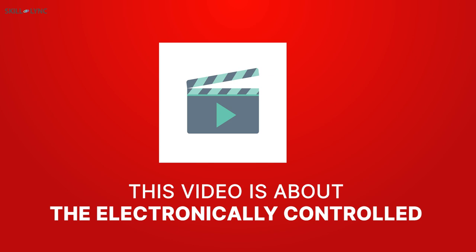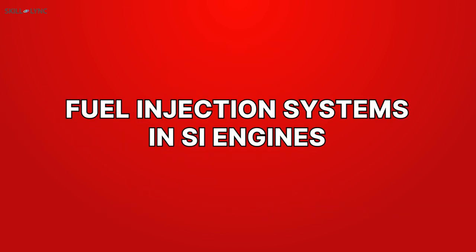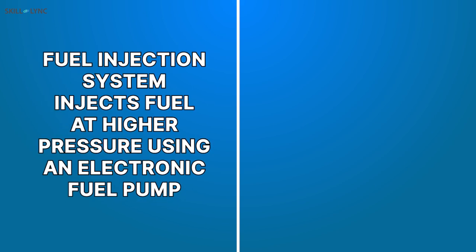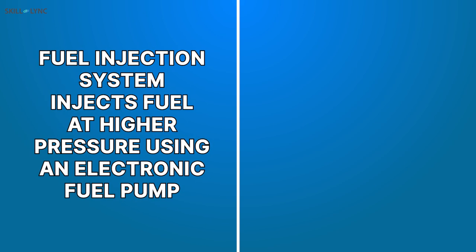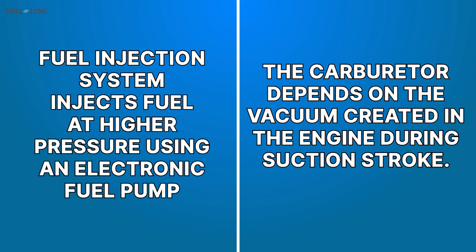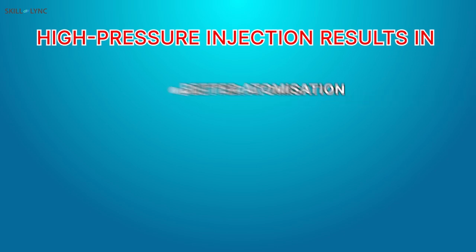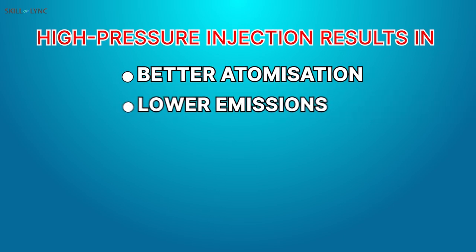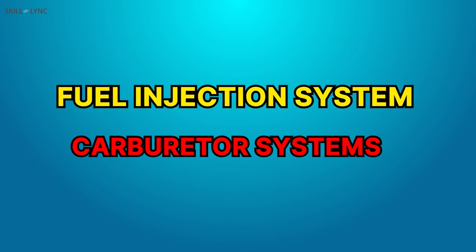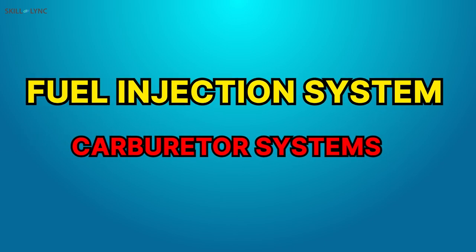This video is about the electronically controlled fuel injection system in SI engines. Fuel injection system injects fuel at higher pressure using an electronic fuel pump, whereas the carburetor depends on the vacuum created in the engine during suction stroke. High pressure injection results in better atomization of the fuel, lower emissions and increased power. This makes the fuel injection system a better option when compared to the older carburetor systems.